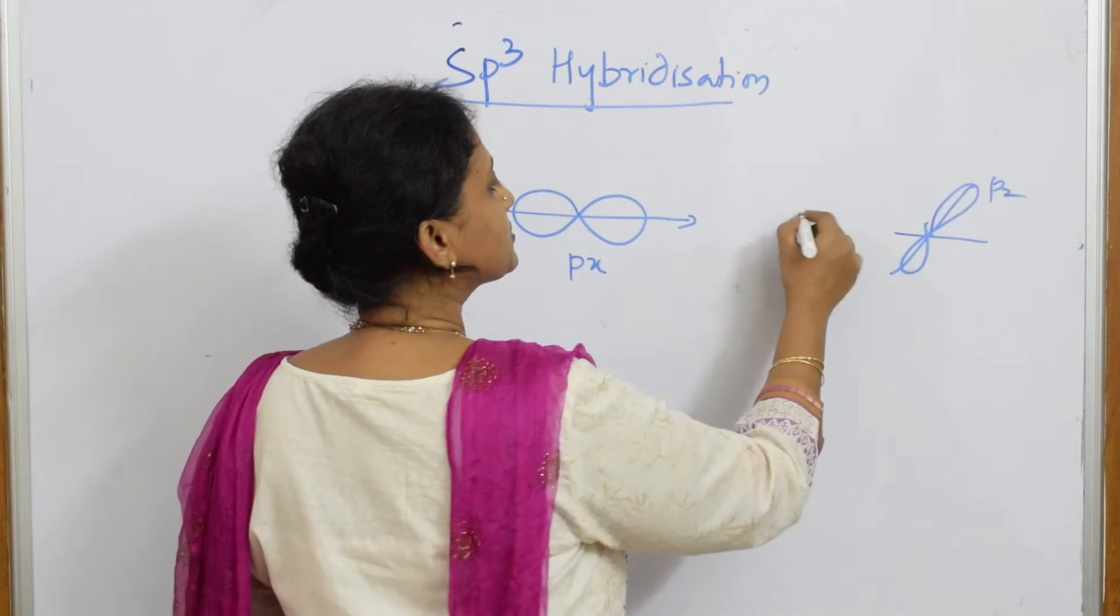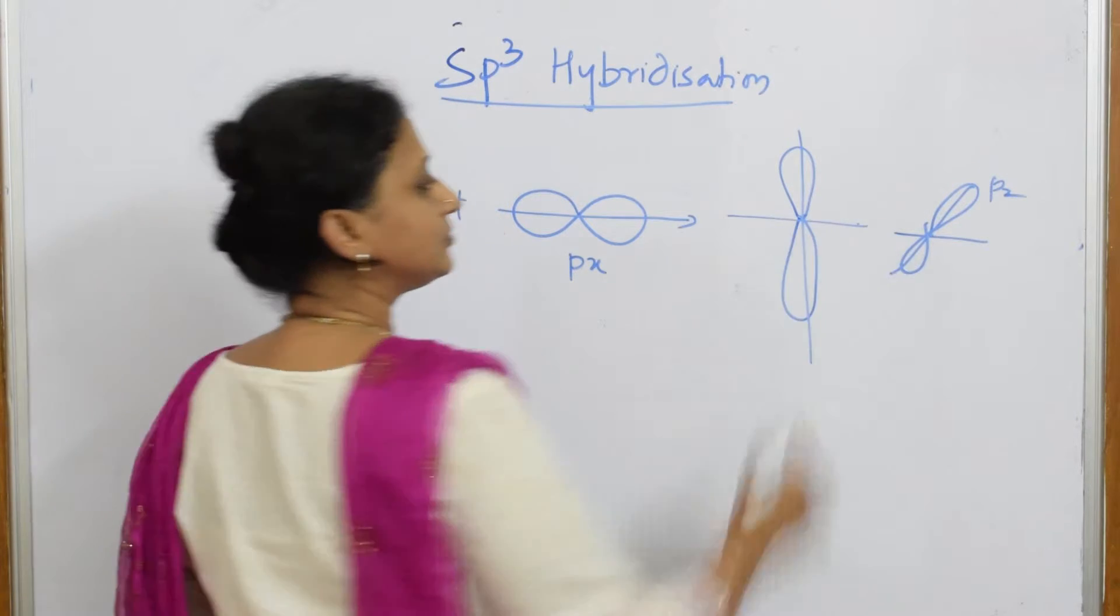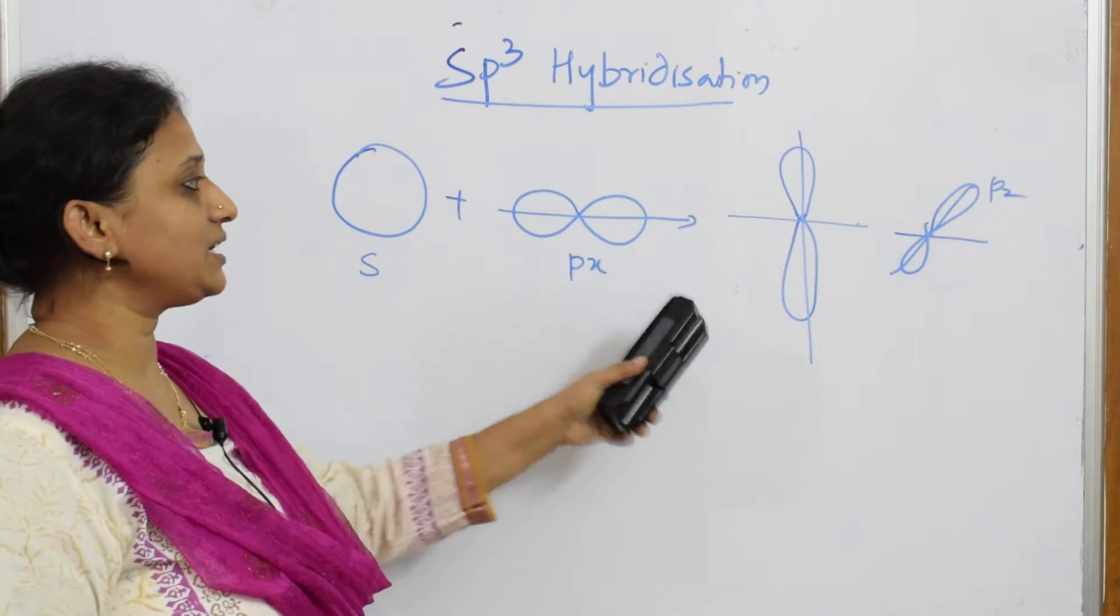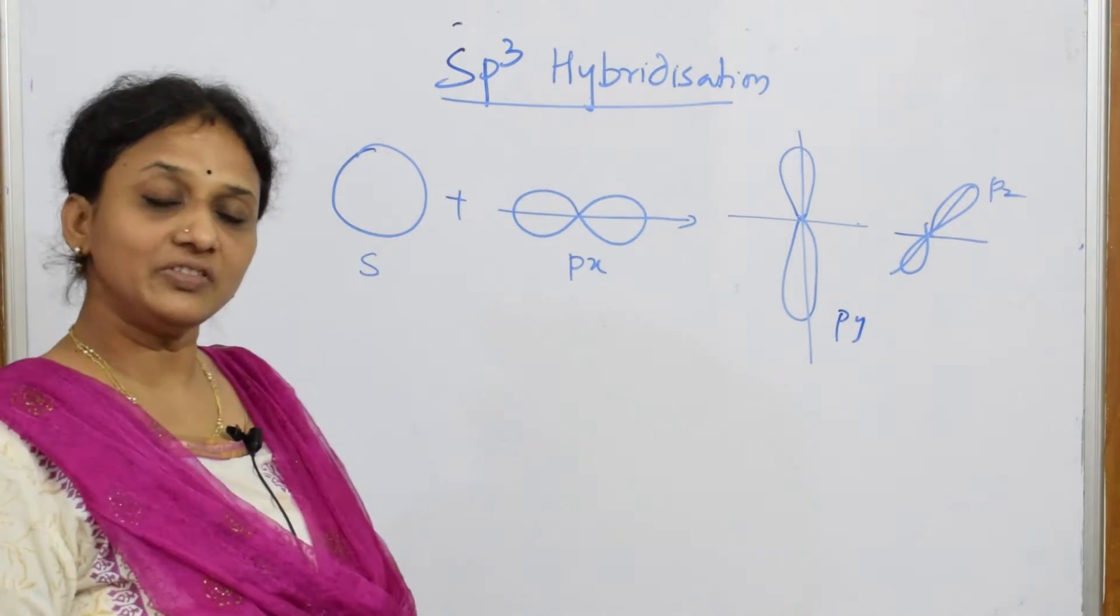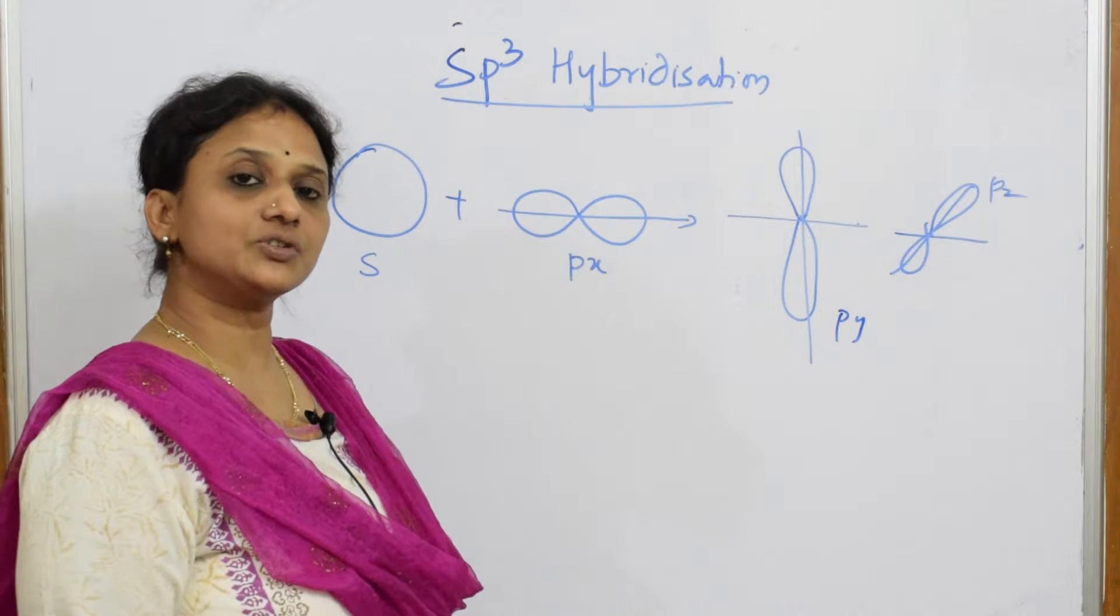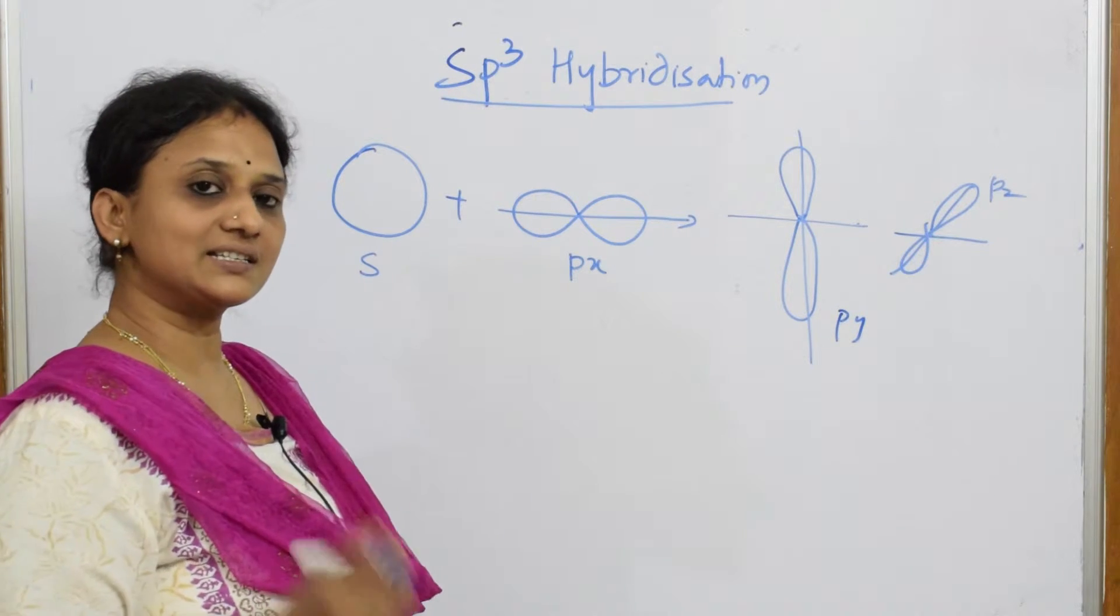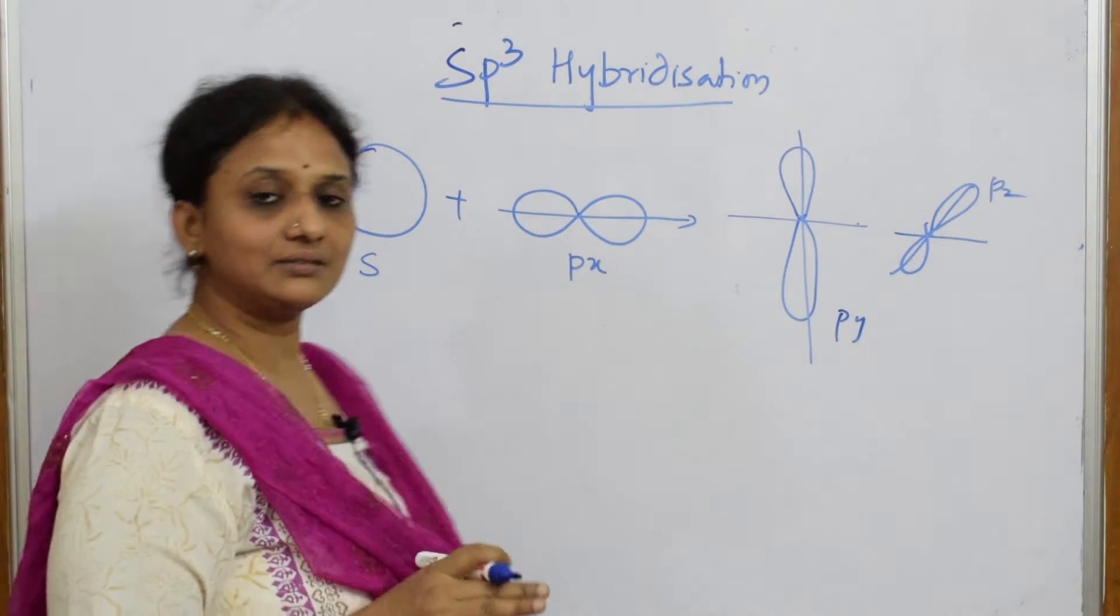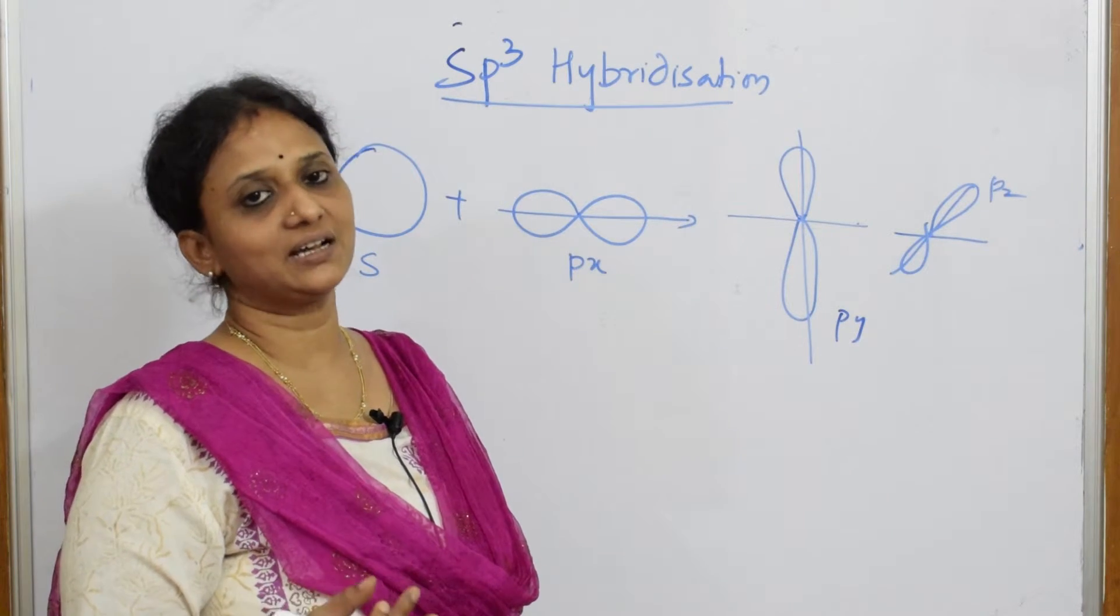So I made the structure, let me make this properly. The intermixing of 1S, PX, PY and PZ is called SP3 hybridization. When these intermix together, the structure which after intermixing, after forming the hybrid orbitals, the structure looks like a tetrahedral structure. So remember SP3 means tetrahedral, SP means linear, SP2 means trigonal planar.